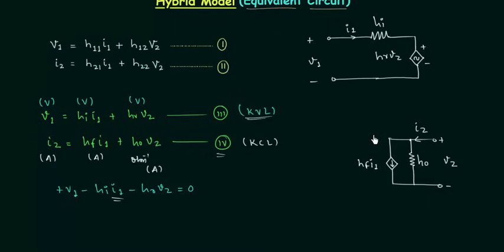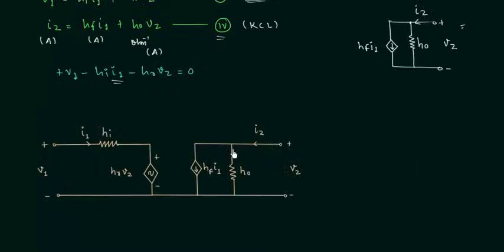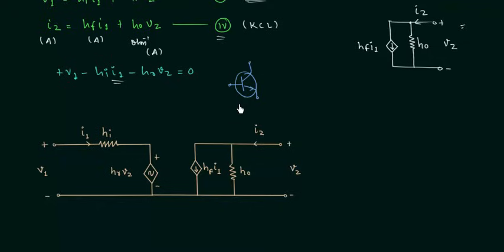By combining the two circuits, we get the final equivalent circuit from Equation 3 and Equation 4. Whenever you have a transistor in a circuit and need to perform AC analysis, you replace the transistor symbol with this equivalent model. This model is general and does not yet include information about the transistor configuration.